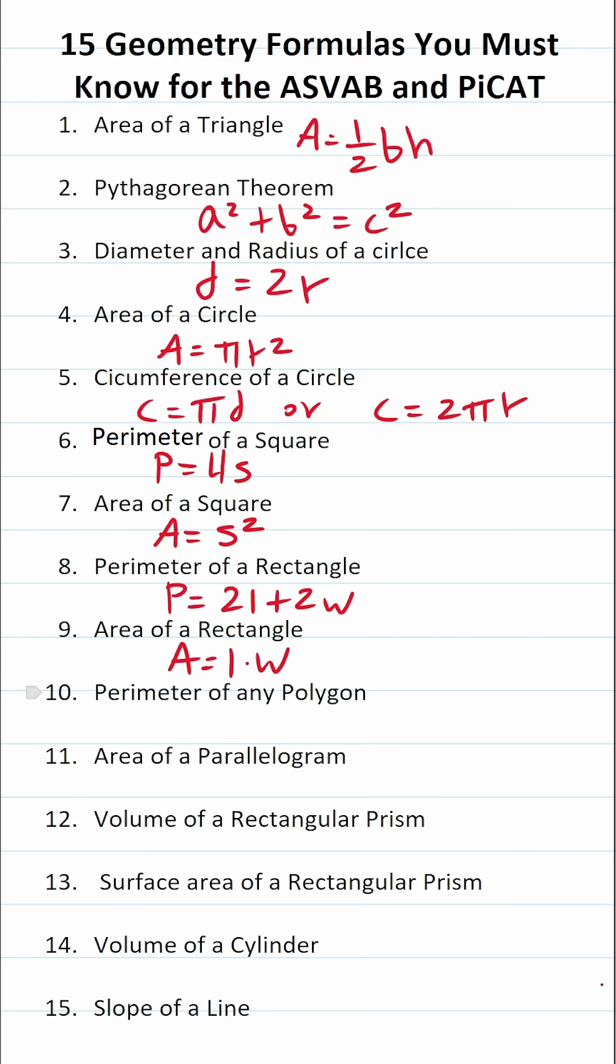To calculate the perimeter of any polygon, you simply add up all of the polygon sides. Area of a parallelogram is base times height.